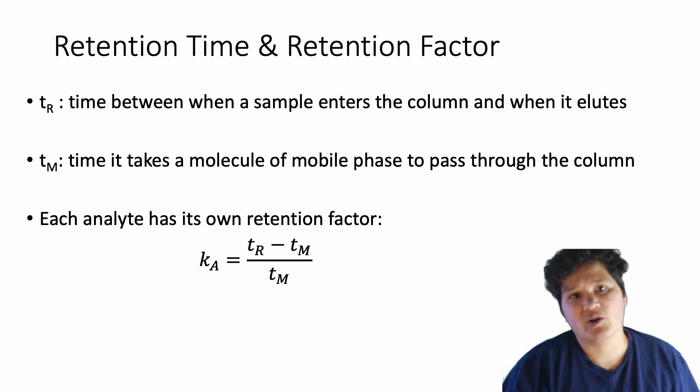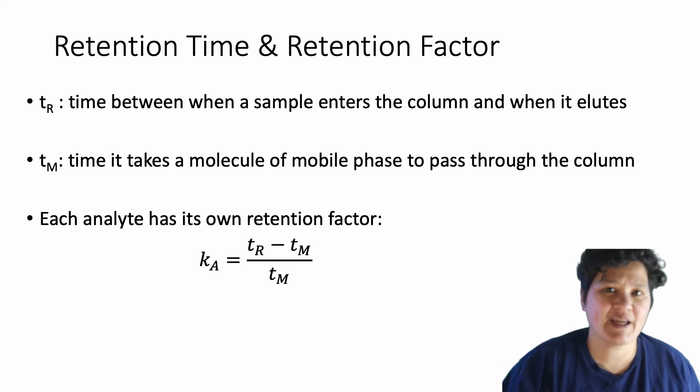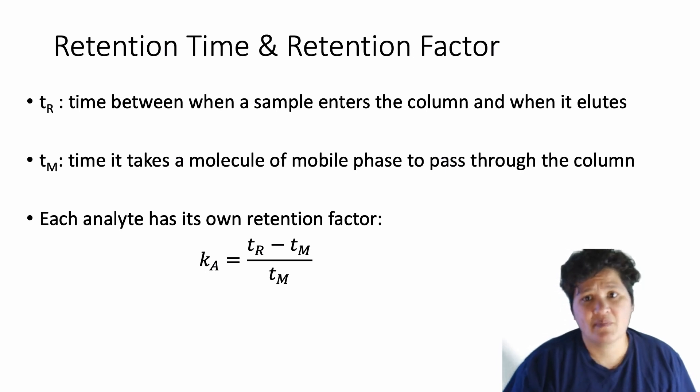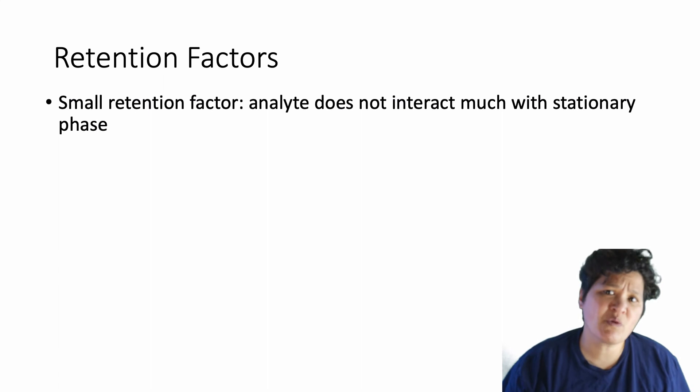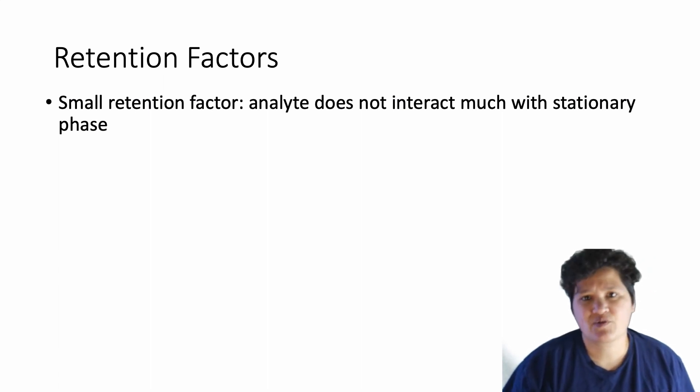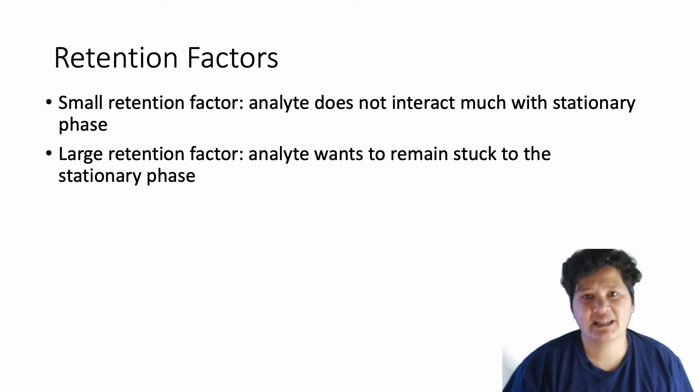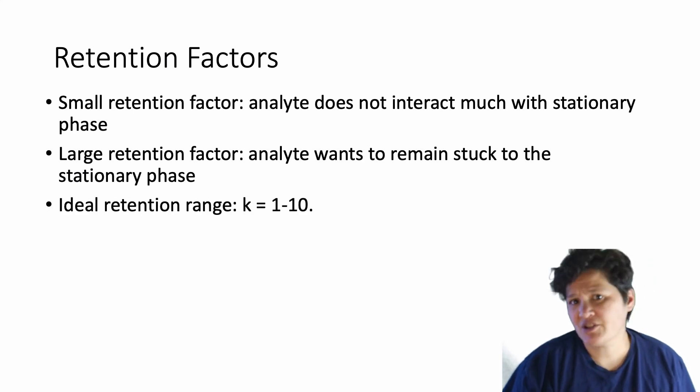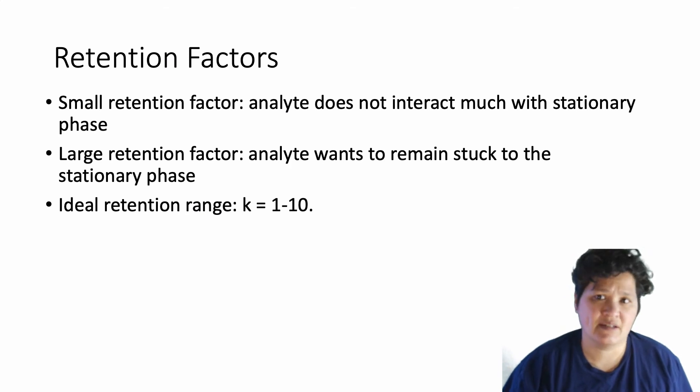We can use the retention time of an analyte to calculate the retention factor K. The retention factor is the retention time minus T sub M, divided by T sub M. So if T sub R equals T sub M, the retention factor is zero. In other words, the column doesn't slow it down at all. In general, small retention factors mean that analytes don't interact much with the stationary phase, while large retention factors mean that analytes love interacting with the stationary phase. You want to shoot for retention factors in a range of 1 to 10. If you go much above 10, your analyte will be diluted to the point that it may be hard to measure.